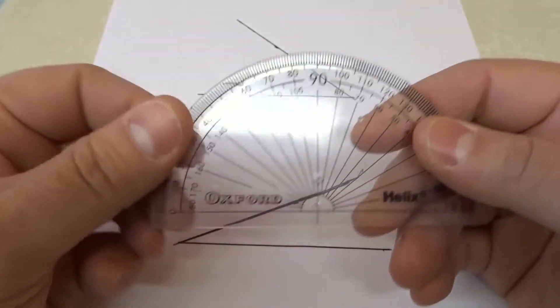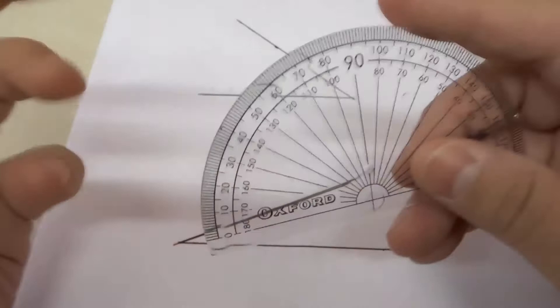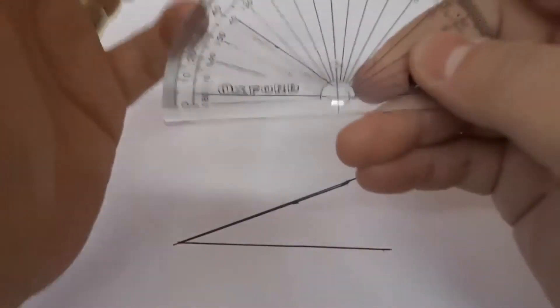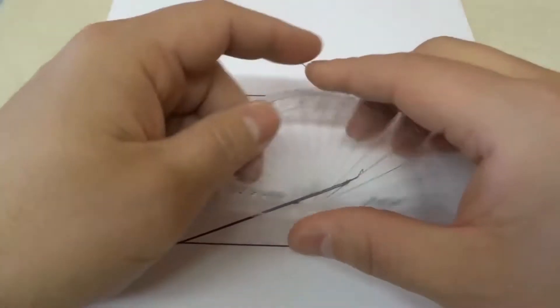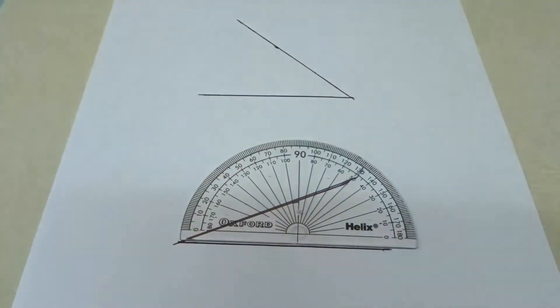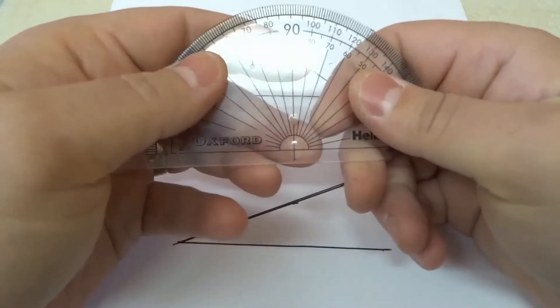As you can see right here I have a very simple protractor. This is the type of protractor that would likely be included in any math kit that you would get. There are math sets that you can get and this is the type of protractor that would be included in that.